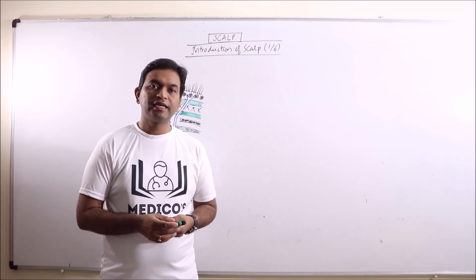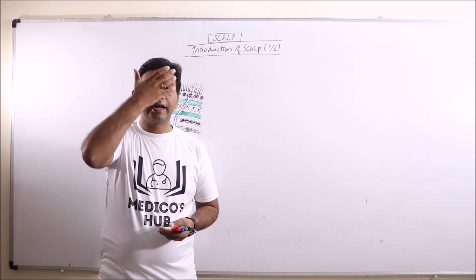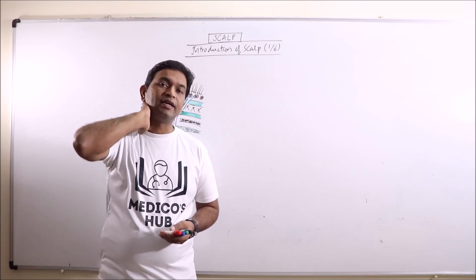So, what is scalp? Scalp is basically an anatomical area which is bordered by face anteriorly and neck on posterior and lateral sides. It consists of the soft tissues covering the vault.